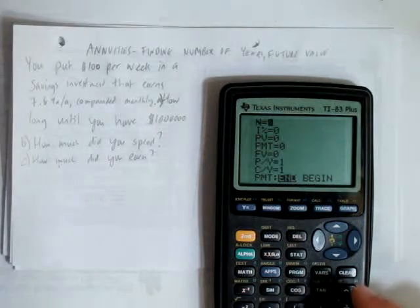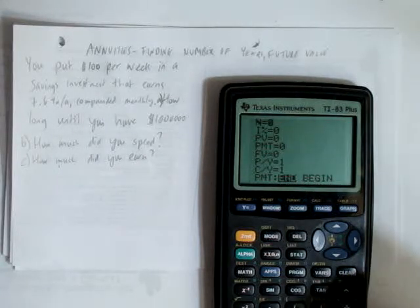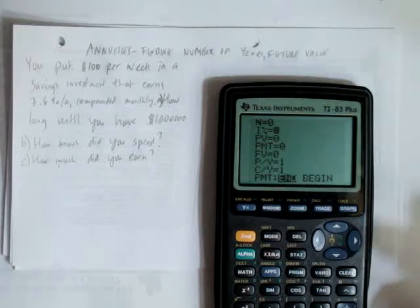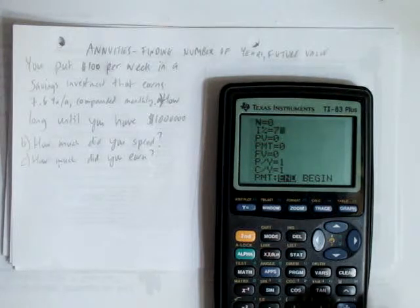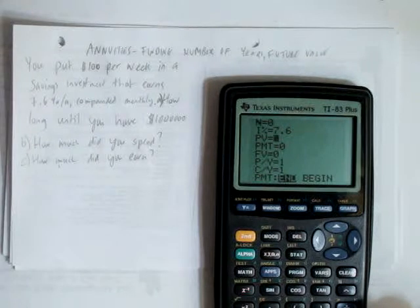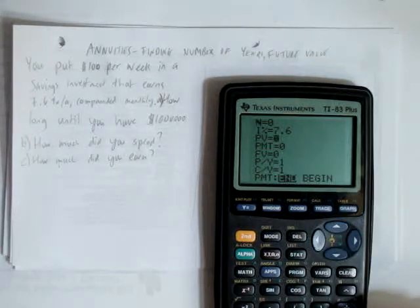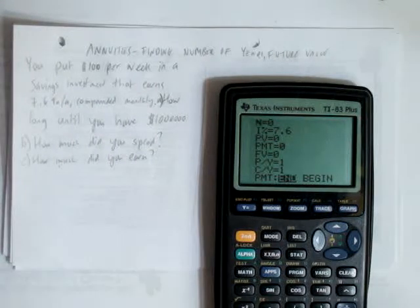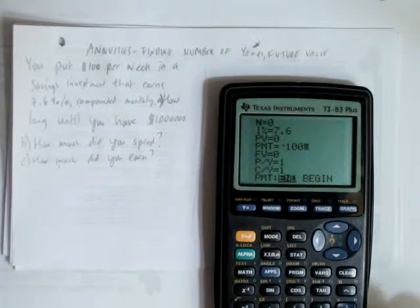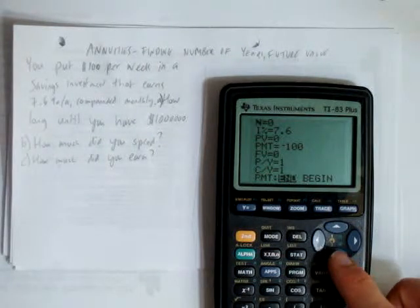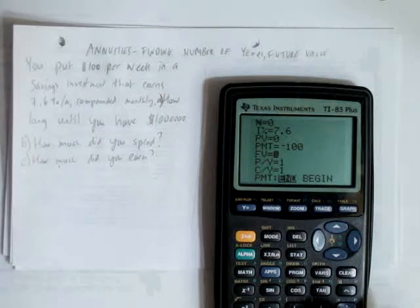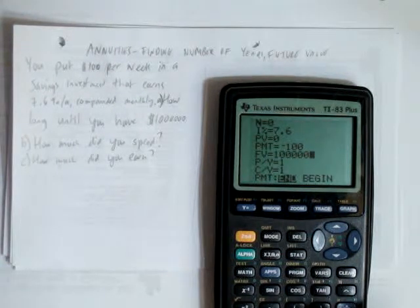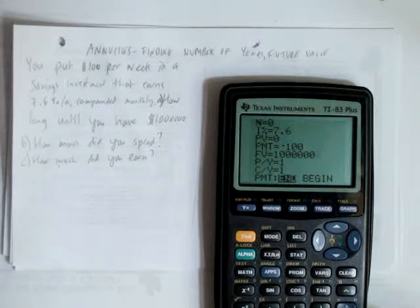Start with N and that's what we don't know, we're trying to find the number of years but we start with it and remember that's what we're finding. Our interest is 7.6%. Our present value is zero, we assume we start with no money or it's just zero, we're not going to use it. But we're going to make payments of $100 and the $100 is negative, use the white minus button, not the blue minus button. Our future value, that's going to be $1,000,000. We want to find out N how long is it going to take to get $1,000,000 with six zeros.